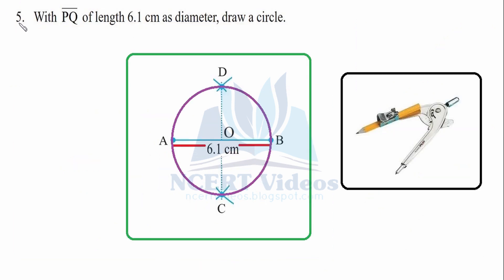Question 5: With line segment PQ of length 6.1 cm as a diameter, draw a circle. This is the required diameter, but for a circle we need a radius, which is half. So if we bisect the diameter, we get the radius and center.